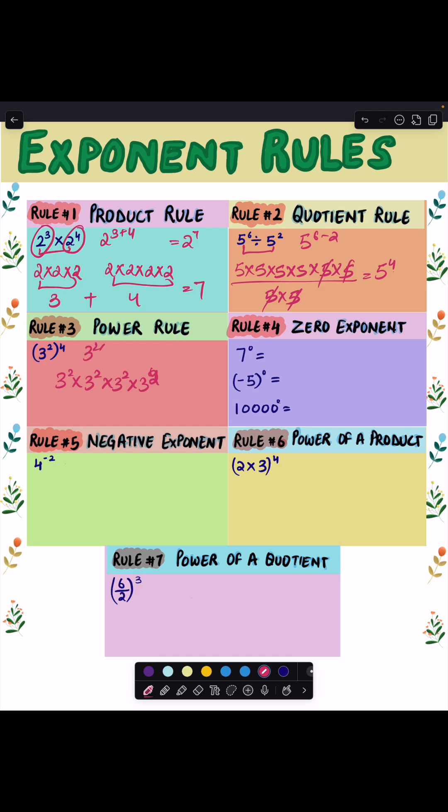Since 3 raised to power 2 already has two 3s, and you're doing that four times, you end up with 2 times 4, which equals 8. Our next rule is the zero exponent rule, and it says any number raised to the power of 0 always equals 1. So 7 raised to power 0 is 1, minus 5 raised to power 0 is 1, 10,000 raised to power 0 is also 1.